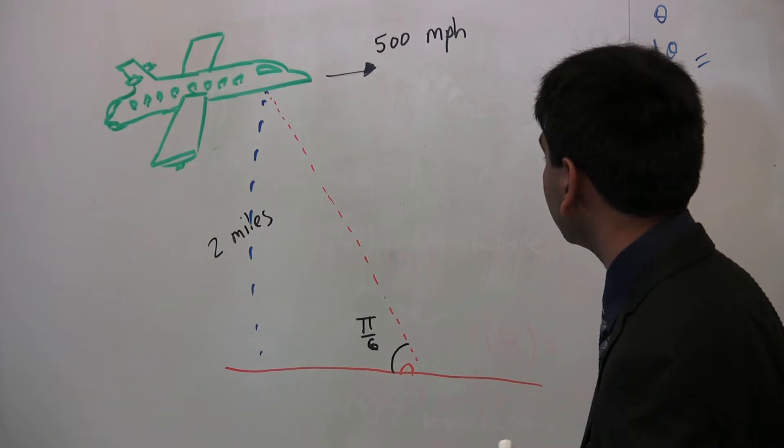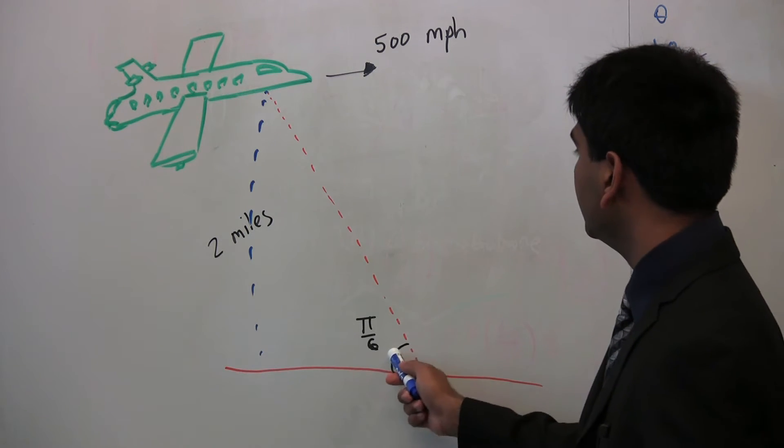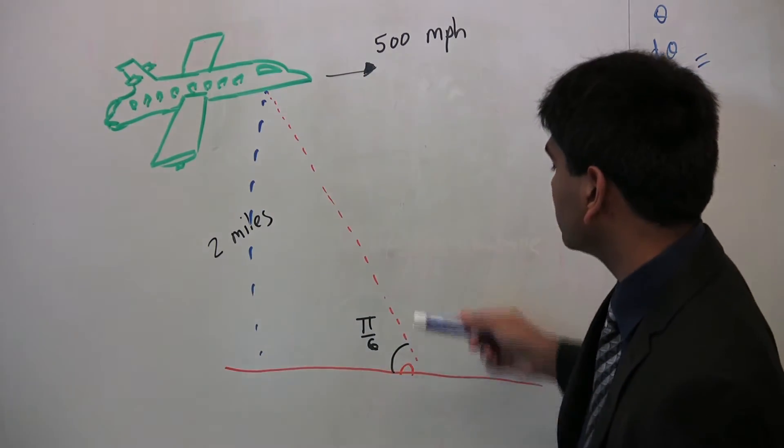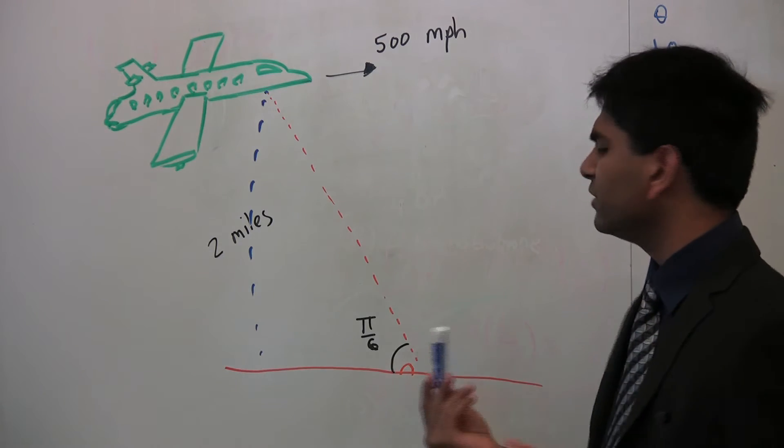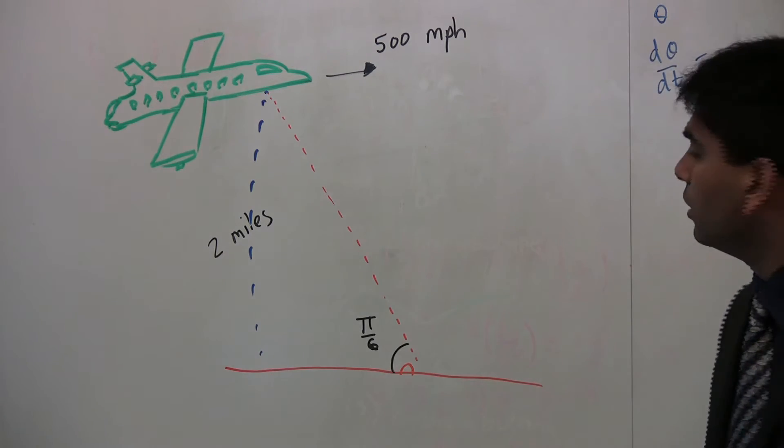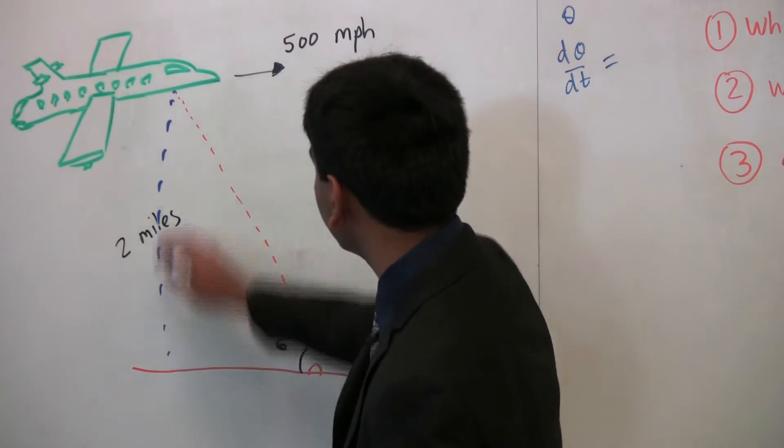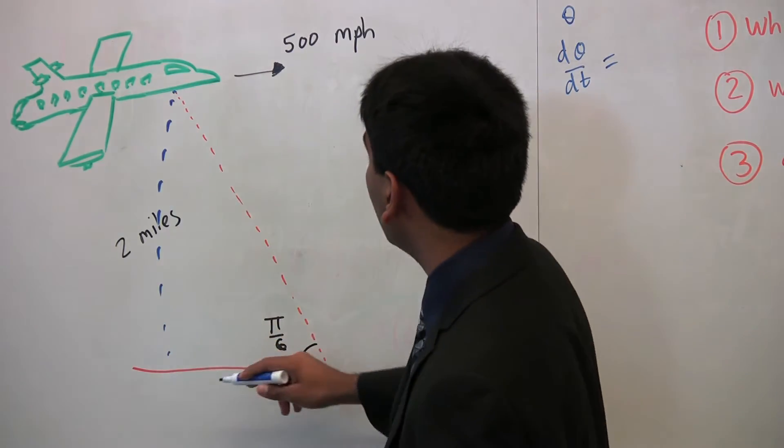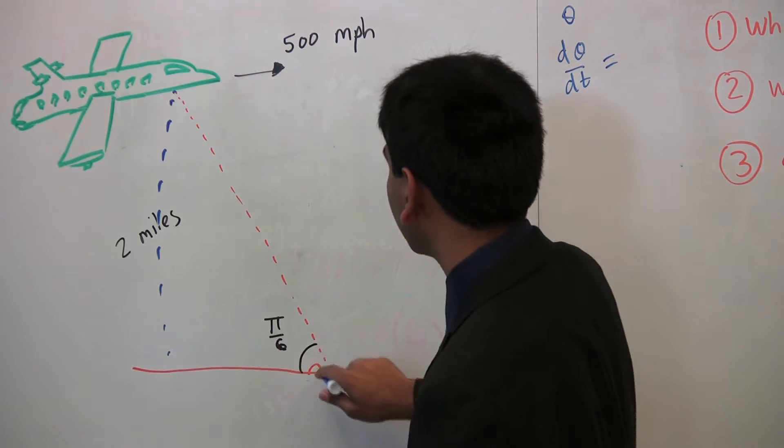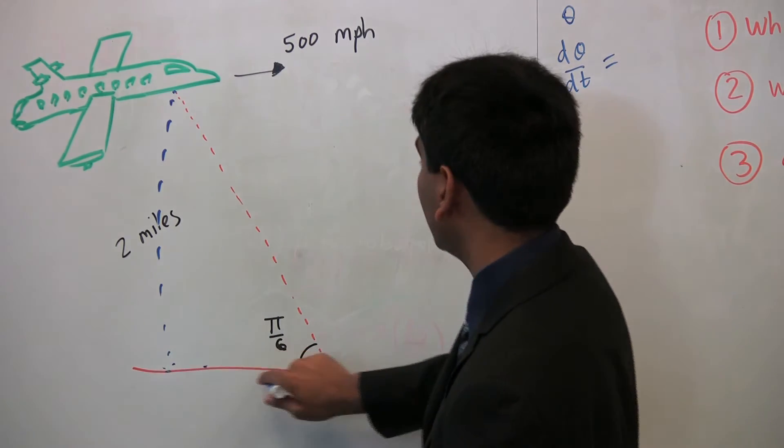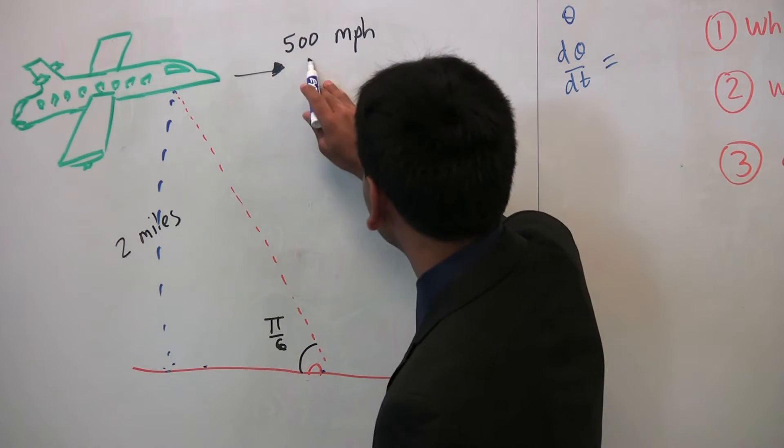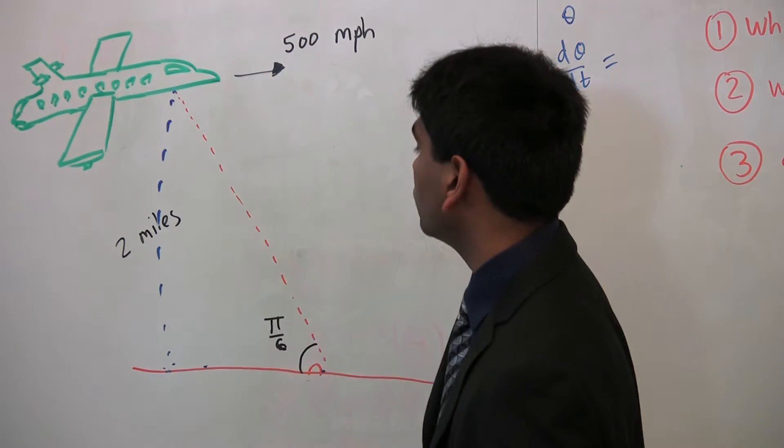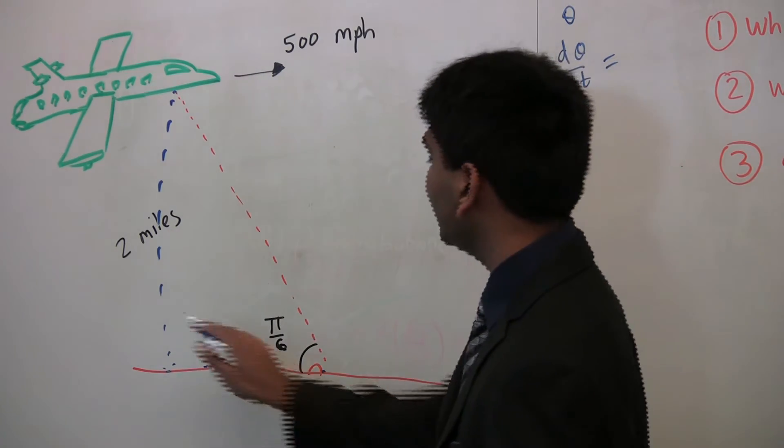So, we can either say that the sine of this theta equals two miles over the hypotenuse, but now, should we use sine, cosine, or tangent? Well, as we can see, we're given something about this direction. So, we know that it's either going to be tangent or sine, but we're also given something about this direction. We're not given how far it is. In fact, that keeps changing, but we're given how fast it changes. So, we're given something about this direction and something about this direction. So, it's in our best interest to write about tangent.